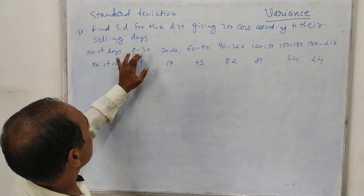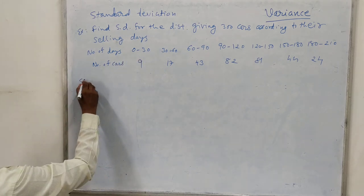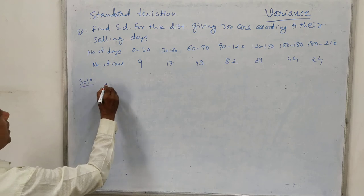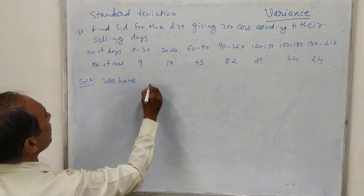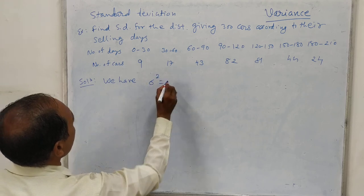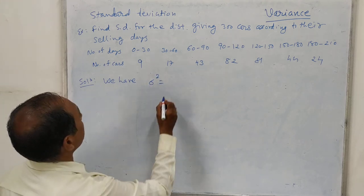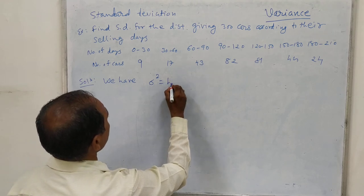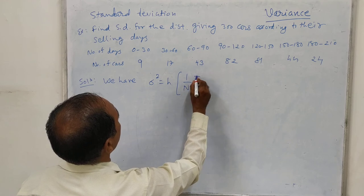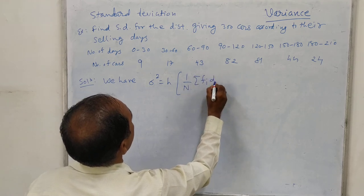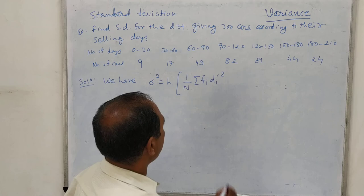The length of the interval h is 30, so it is better to use the formula with di dash. Sigma square equals h squared times 1 upon capital N times sigma fi di dash square minus (1 upon capital N times sigma fi di dash) whole square, where di dash equals (xi minus A) upon h.